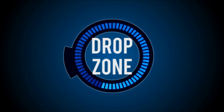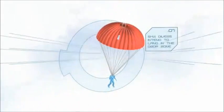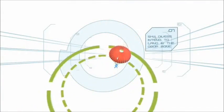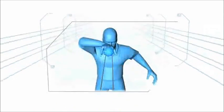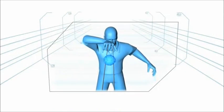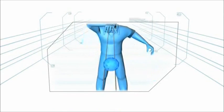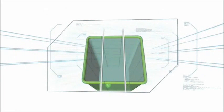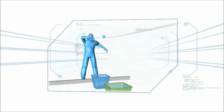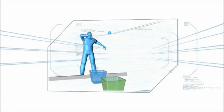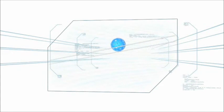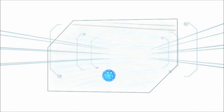Drop Zone. A drop zone is defined by skydivers as the area in which they intend to land. In this challenge, the contestant will guide a ball along a track made of two strings and then, at the perfect moment, relax the strings, causing the ball to fall through the air and land in a drop zone bucket below.